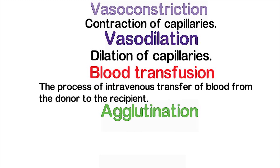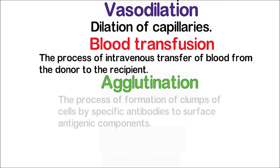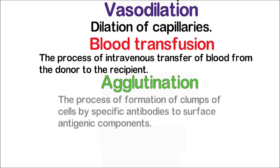Agglutination is the process of formation of clumps of cells by specific antibodies to surface antigenic components. That means the antibodies are attached to the antigens as if attached with glue — they cannot be separated.